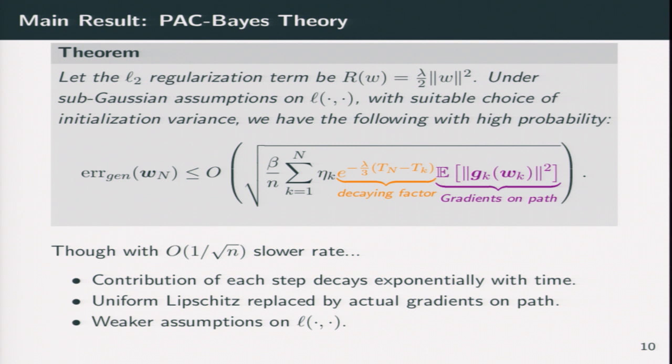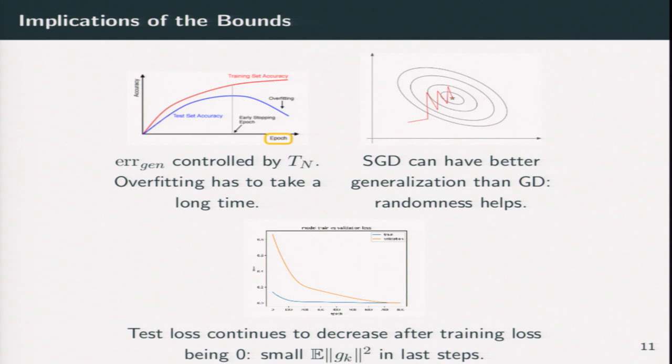So why this is useful for very large non-convex models such as deep neural networks? The first thing is that as we can see in our motivation, the bound is depending on the aggregate step size, the total time that it takes. And you can see that if you train longer, it can be likely to overfit.